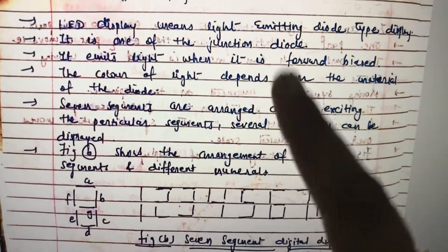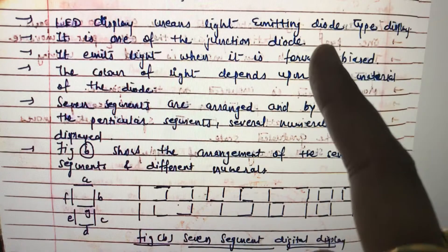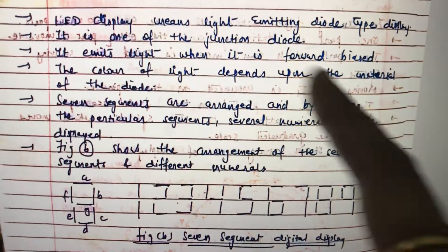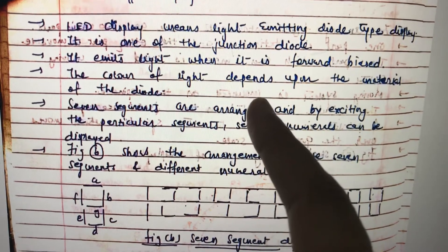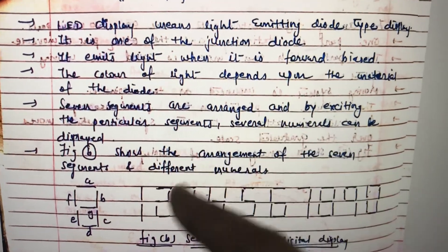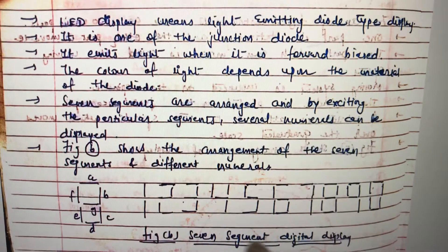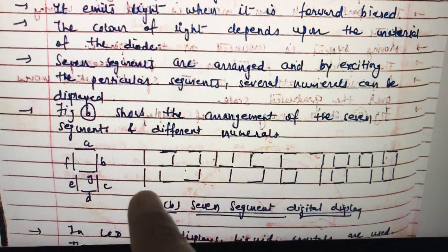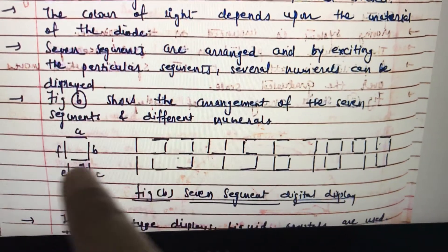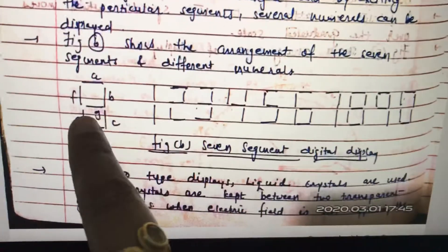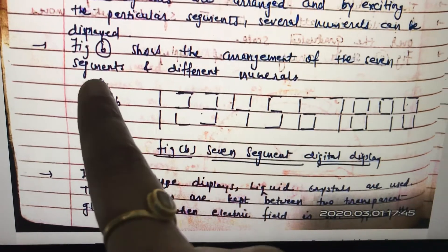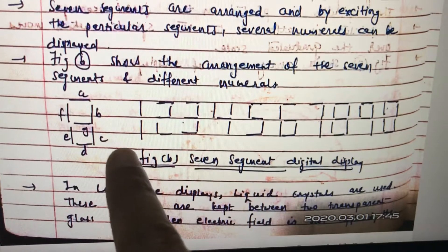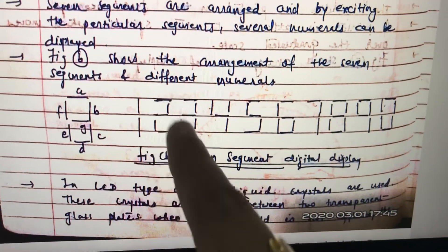The color of light depends upon the material of the diode. So whatever material is used, the color will show accordingly. This is seven segments arranged here. Remember that it is always LEDs which are going to be arranged in a seven segment form. So these are seven segments: a, b, c, d, e, f, and g.